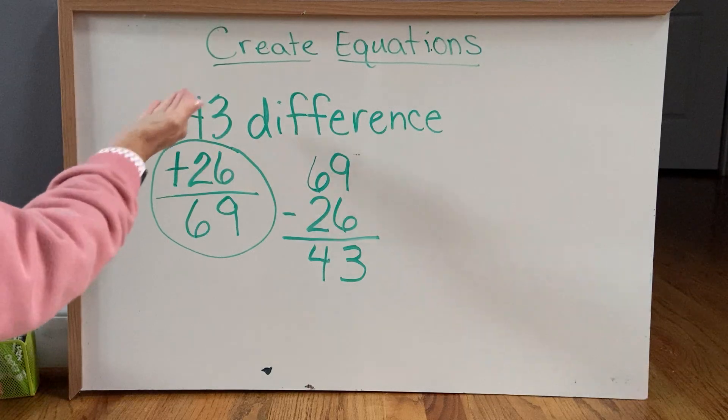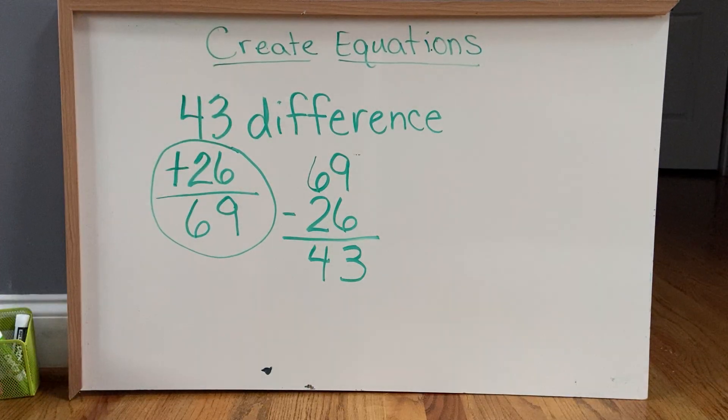If you want to make 43 your sum, then you have to subtract a number from it.